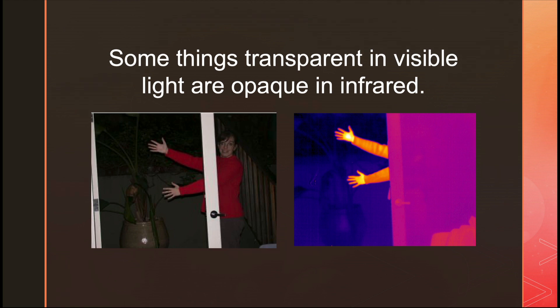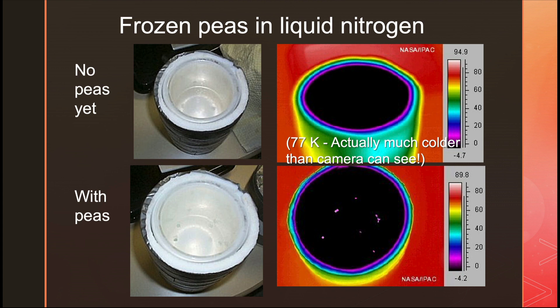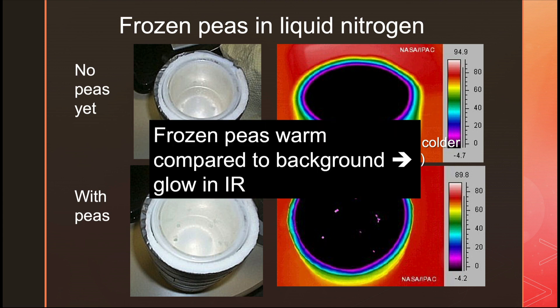Now we're going to leave the everyday regime. What I have here is a Dewar — really just a fancy thermos bottle — with liquid nitrogen in it at 77 Kelvin, which is much colder than the infrared camera can see, so it colors it all black. But when I put frozen peas in the liquid nitrogen, the peas are cold but not 77 Kelvin, so they're warm compared to the background and the infrared camera can see them glowing. That's exactly what's going on in space: the things we study are cold, but warm compared to the background.